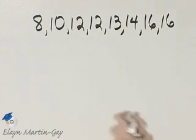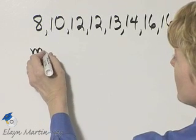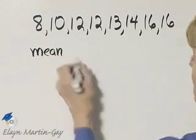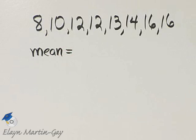So let's first find the mean. How do you find the mean? The mean is equal to the sum of the numbers divided by the number of numbers.